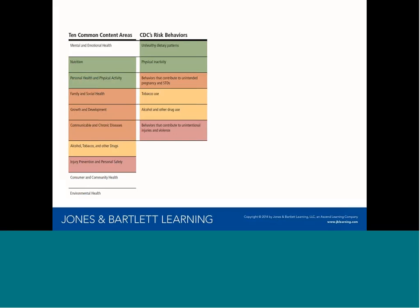Healthy eating and physical activity naturally go together. Tobacco, alcohol and drugs also naturally go together. Here you can see how the grouped risk behaviors correlate with the 10 content areas. Here, disease is colored to go with sex education, but it can also be taught with nutrition and drugs — so it can effectively be integrated into all four areas.